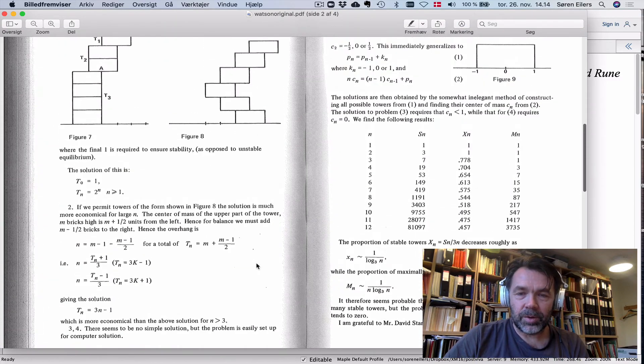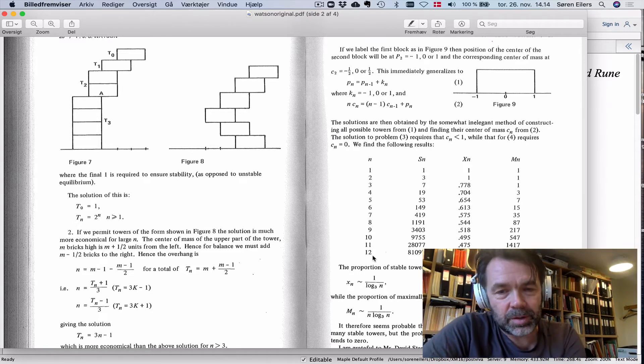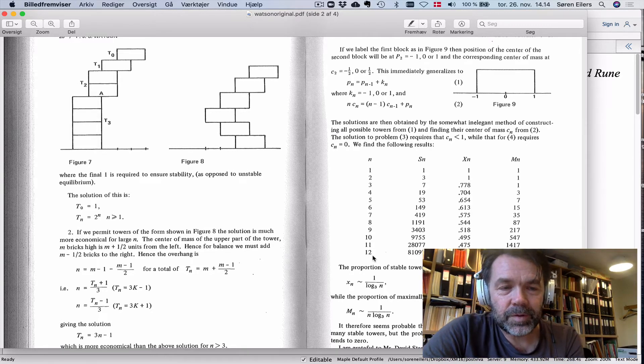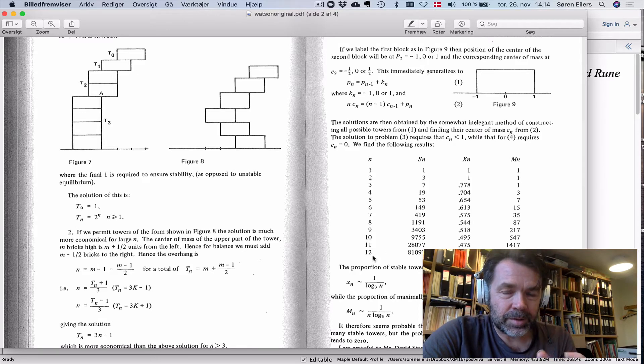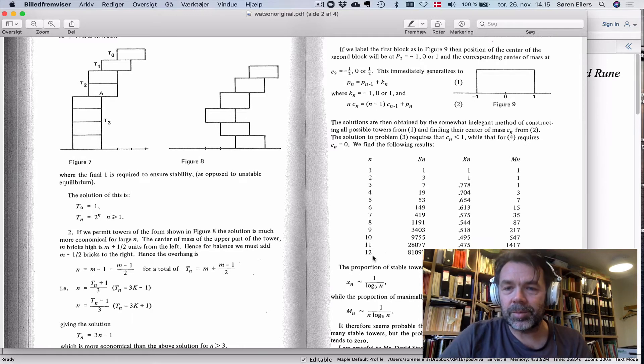This is done in the paper. As you can see, it's fairly old. He computes these numbers until 12 bricks. The number of stable bricks where the center of gravity is inside the base block, and also the number of maximally stable bricks.